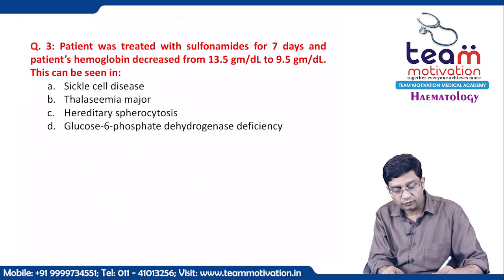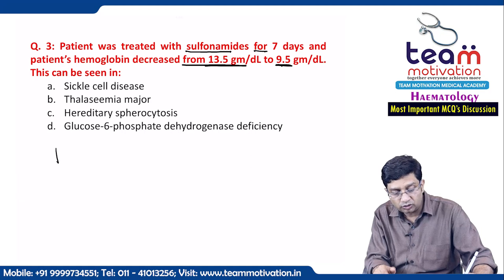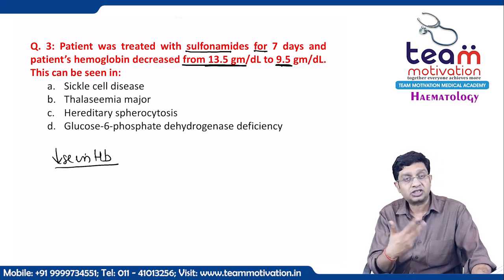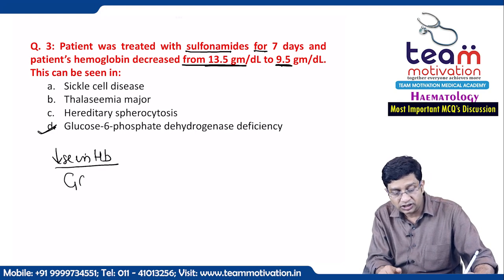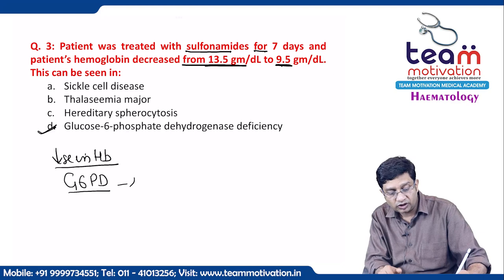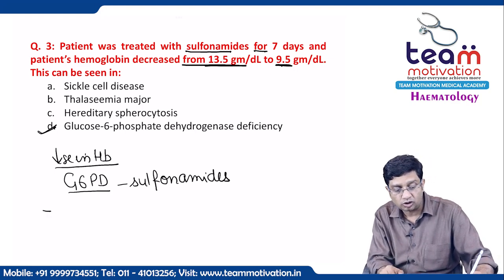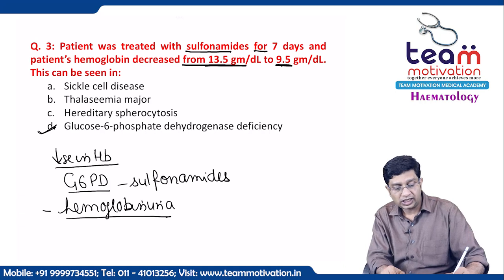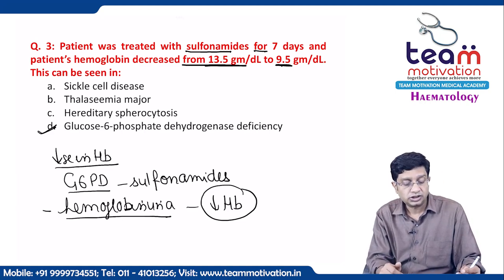A patient treated with sulfonamides for seven days had hemoglobin decrease from 13.5 to 9.5. A drug causing a decrease in hemoglobin suggests G6PD deficiency — sulfonamides are one of the drugs that cause hemoglobinuria in G6PD deficiency by damaging hemoglobin. This is a classic picture related to G6PD deficiency.